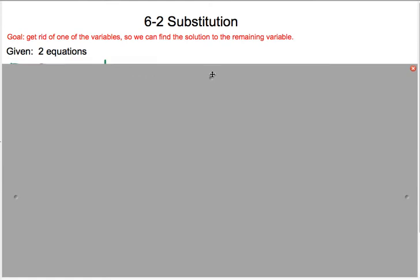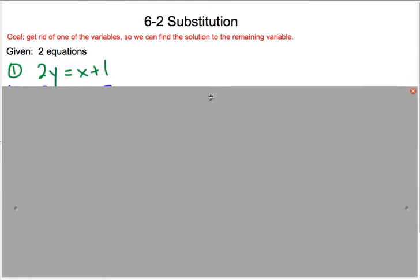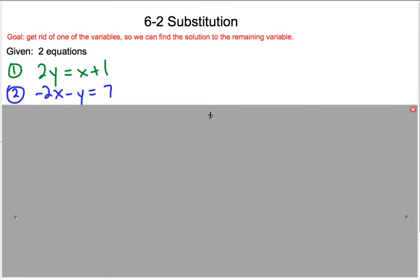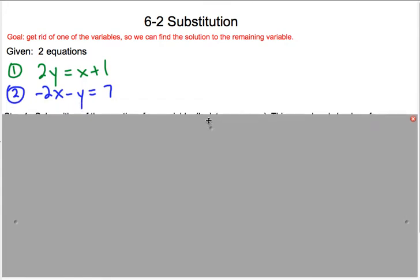Just like in the last one, we're going to be given two equations. Sometimes there's more, but 99% of the time it's two equations. So here they are: 2y = x + 1 and -2x - y = 7.